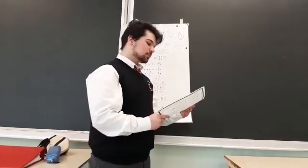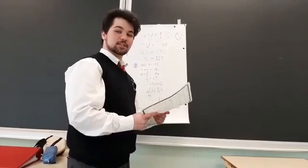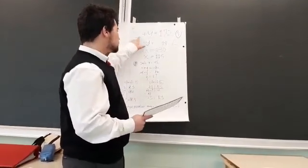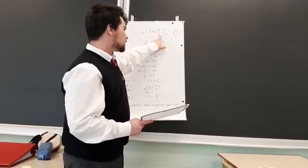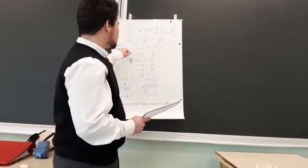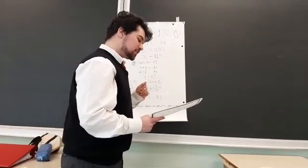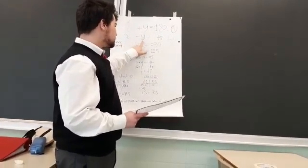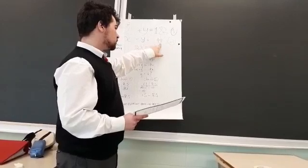So number one is X and number two is Y. The first equation is X plus Y equals 182. The second equation is X minus Y equals 48.